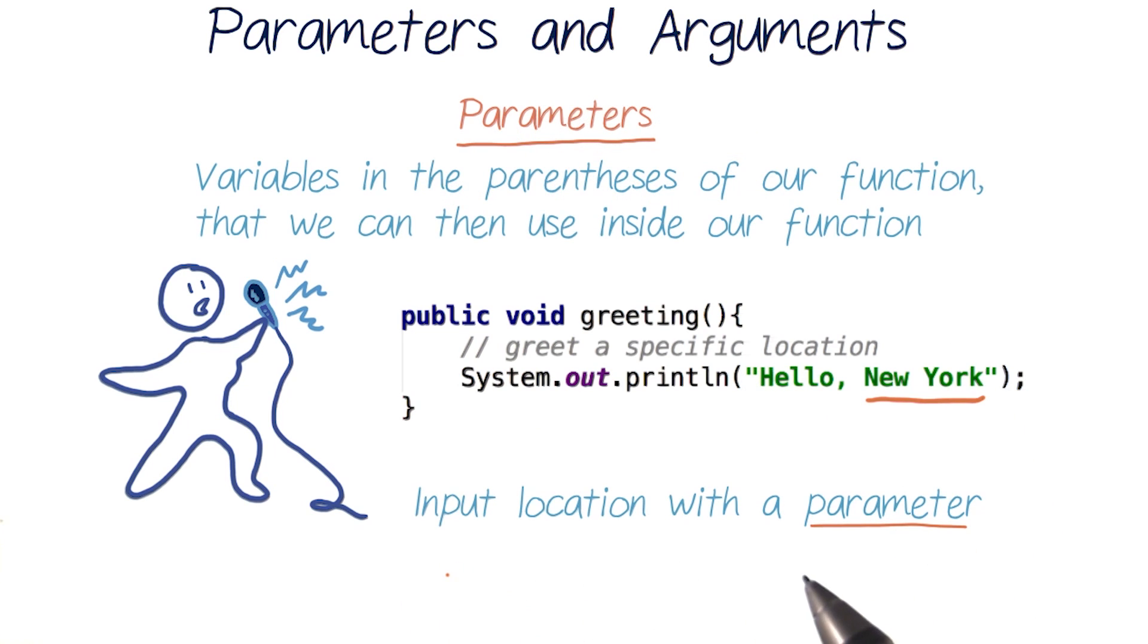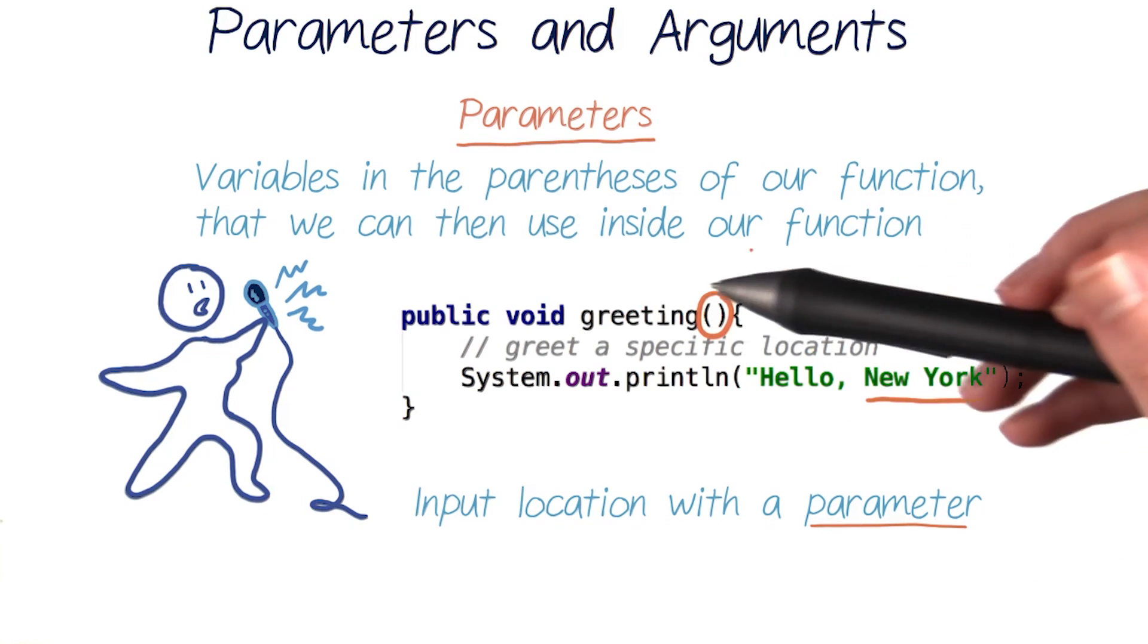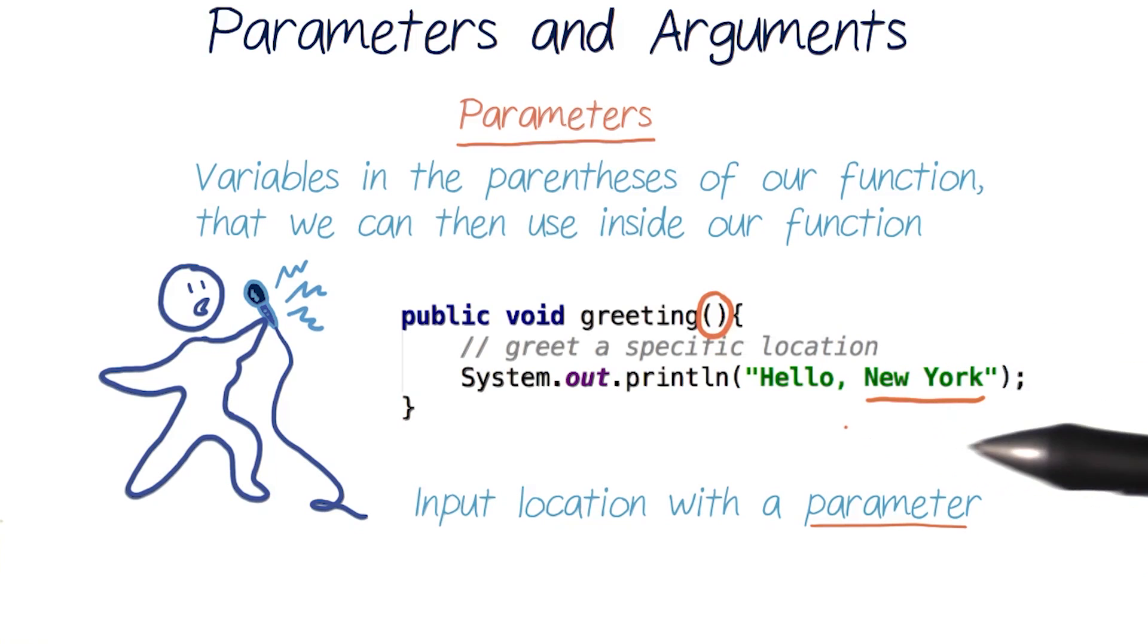We can input data like a location into our function by using something called parameters. Parameters are variables that we can place inside the parentheses of our function definition that our function can then use.